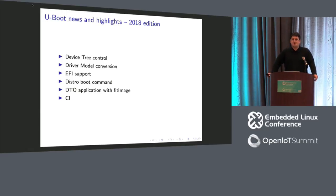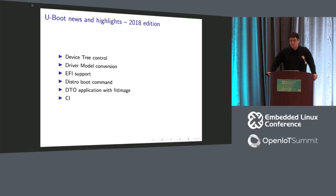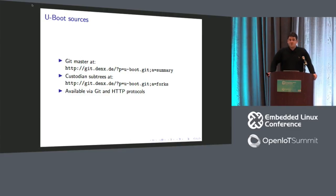We now use Travis CI to do continuous integration on U-Boot, and you can also do that yourself if you're submitting patches. Just get a GitHub account, enable Travis CI — the U-Boot sources now contain a Travis.yml file. When you push to GitHub, it will run the entire U-Boot source tree and build it for multiple architectures to make sure your patch didn't break anything. You can just use Travis CI nowadays instead of grabbing all the toolchains.